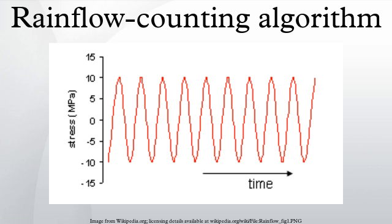Each tensile peak is imagined as a source of water that drips down the pagoda. Count the number of half cycles by looking for terminations in the flow occurring when either it reaches the end of the time history, it merges with a flow that started at an earlier tensile peak,